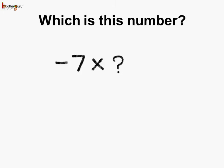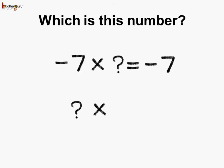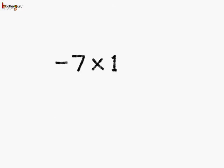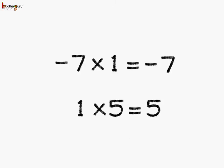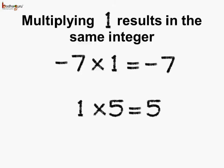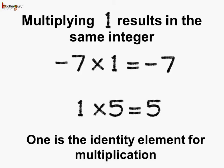Now, minus 7 multiplied by what number will give you minus 7? Or which number multiplied by 5 will give us the product as the number itself, which is 5? Minus 7 multiplied by 1 gives us the product as minus 7, and 1 multiplied by 5 is equal to 5. So multiplying by 1 results in the same integer — we can say 1 is the identity element for multiplication, as when we multiply any integer by 1, the product is the number itself.